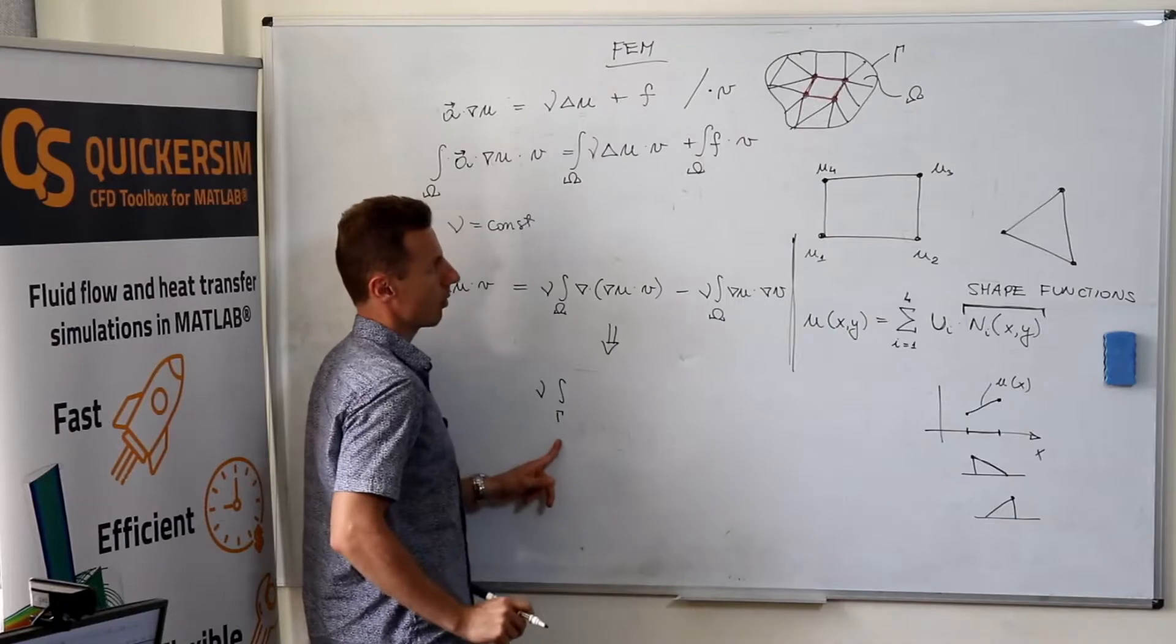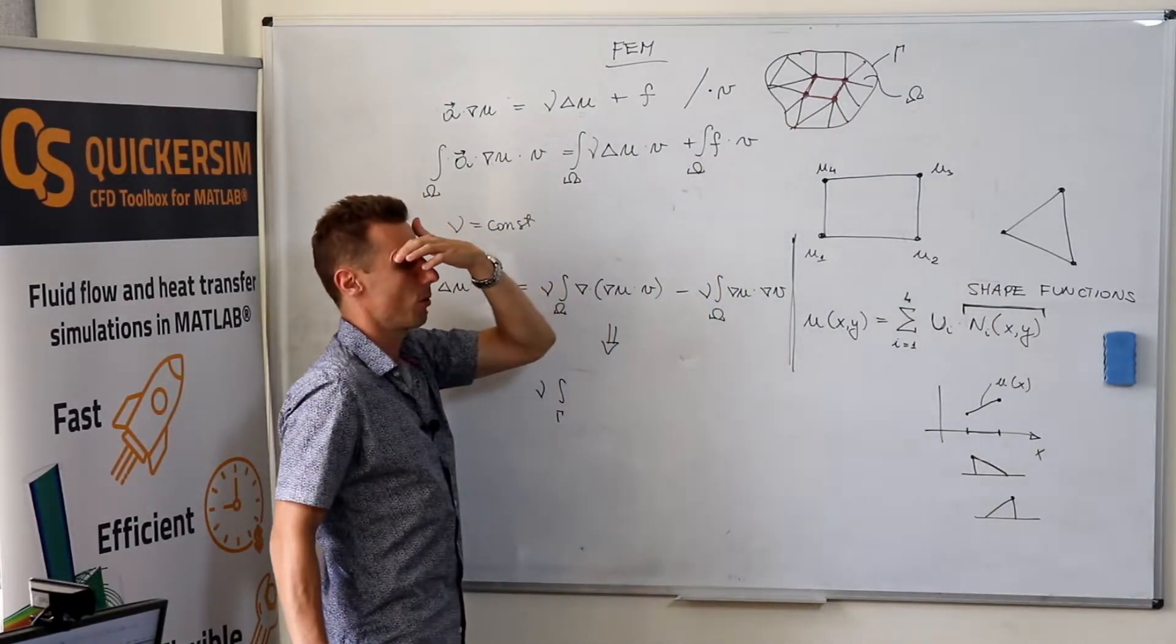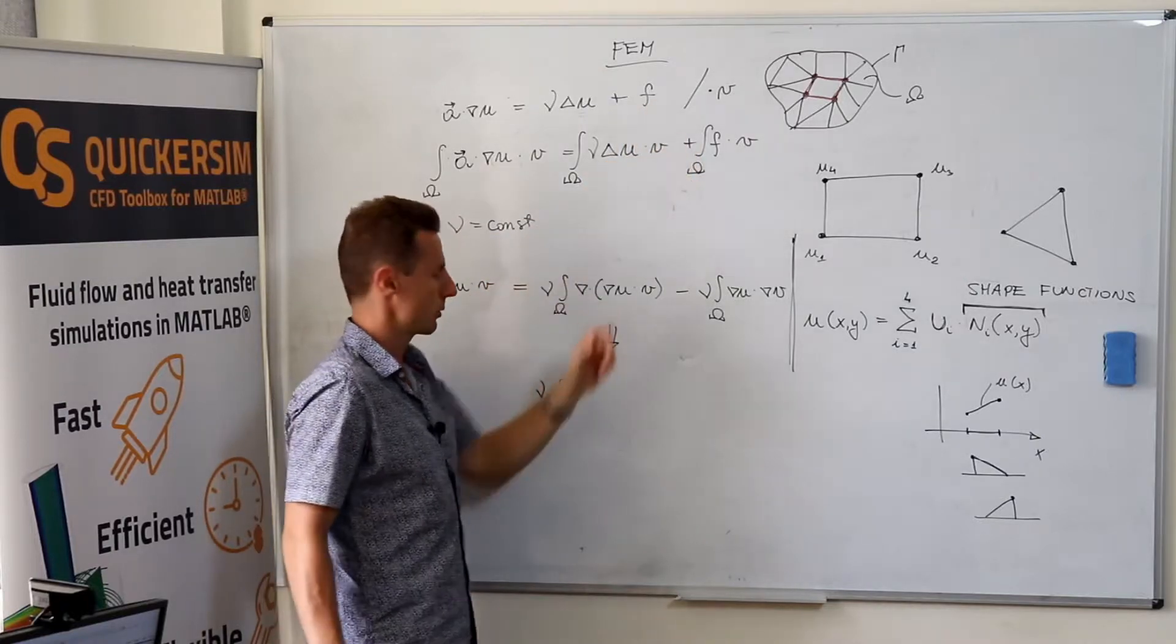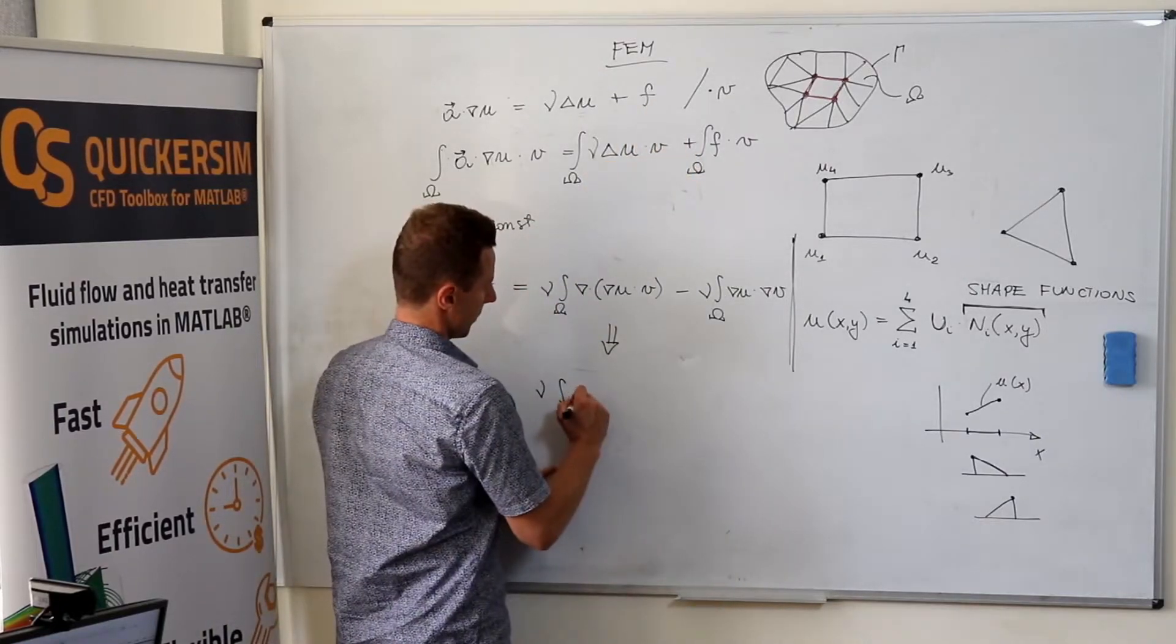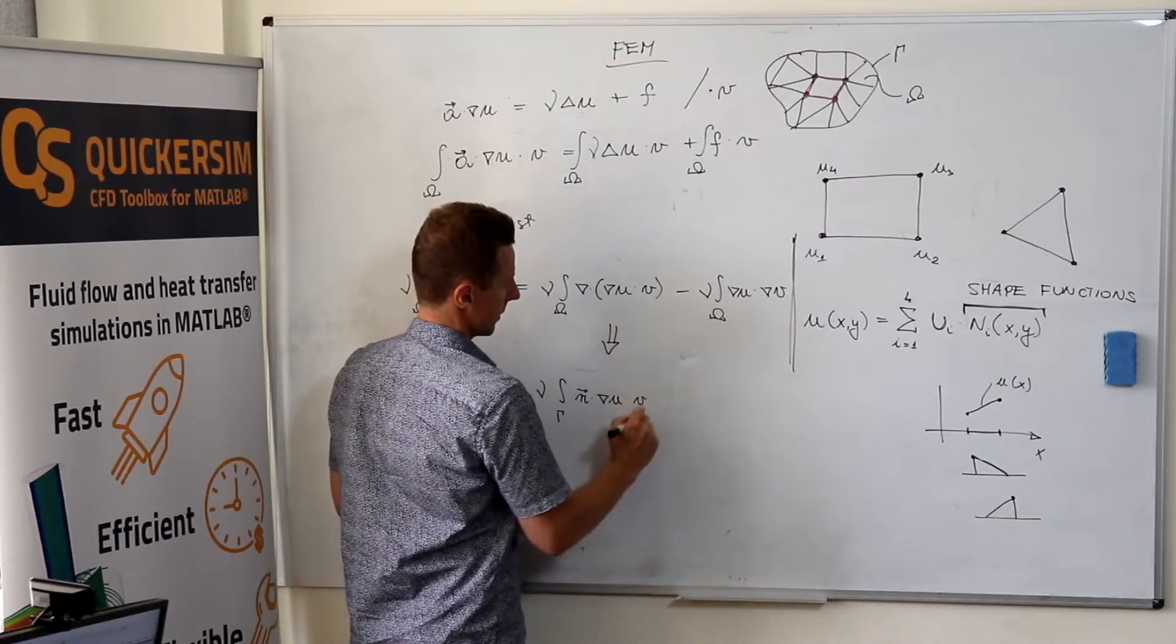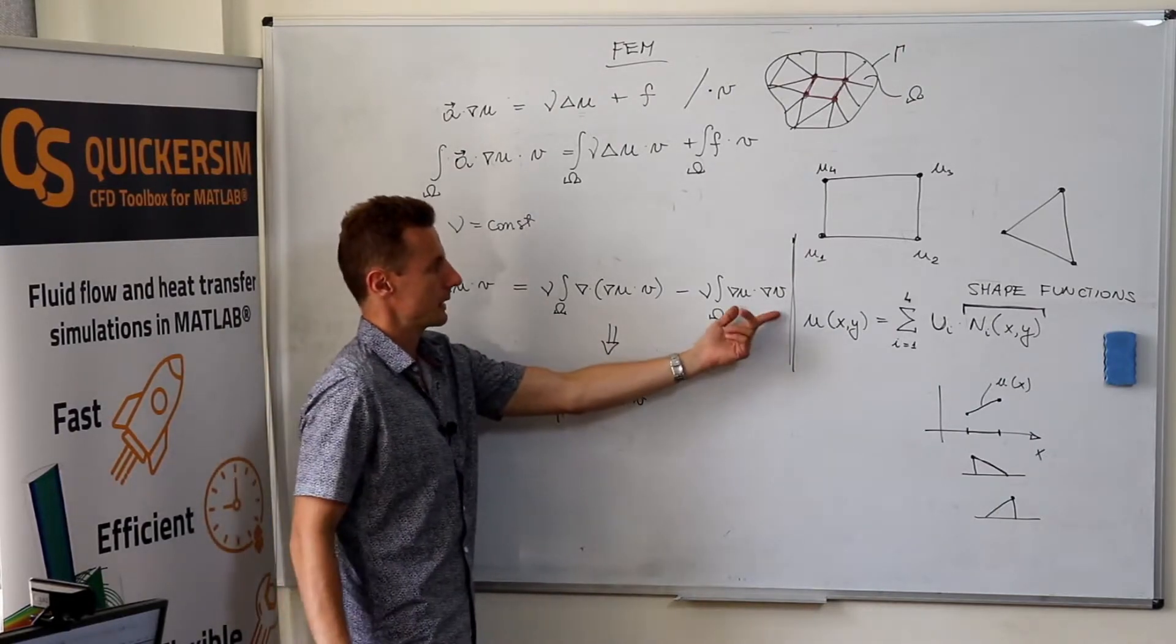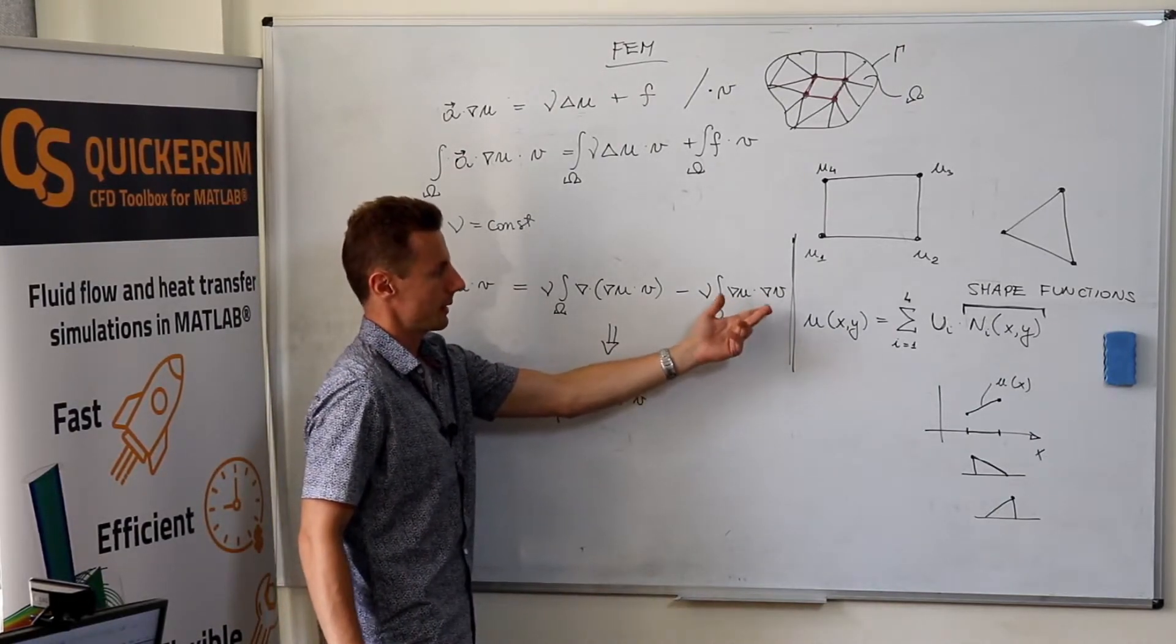This one can be translated to integral of the whole boundary, not the boundary of the element, gradient of the gradient of u times v. Right? And that one we want to leave how it is.